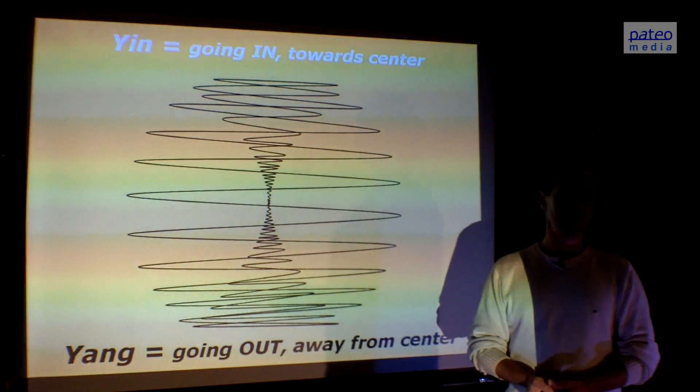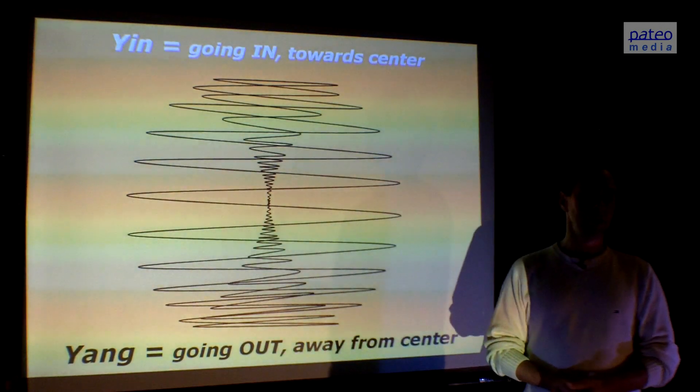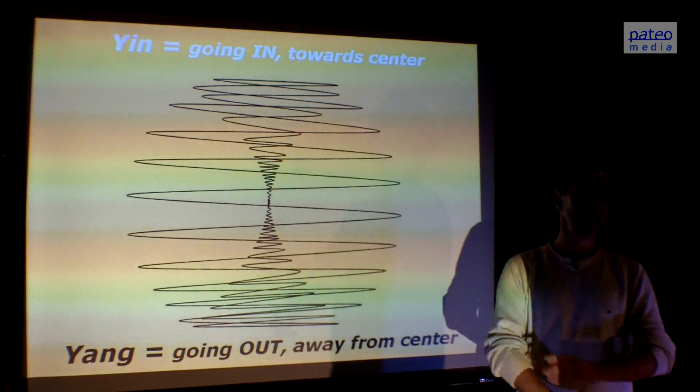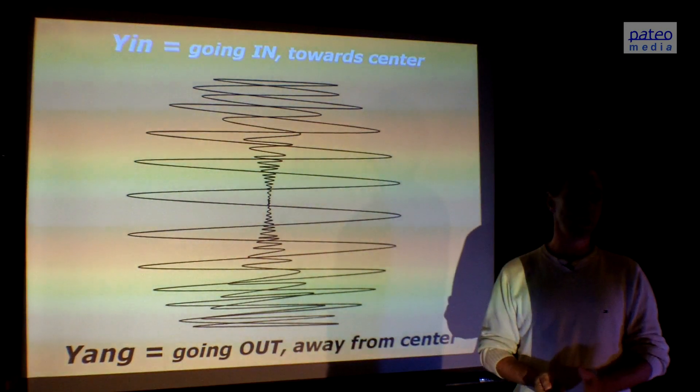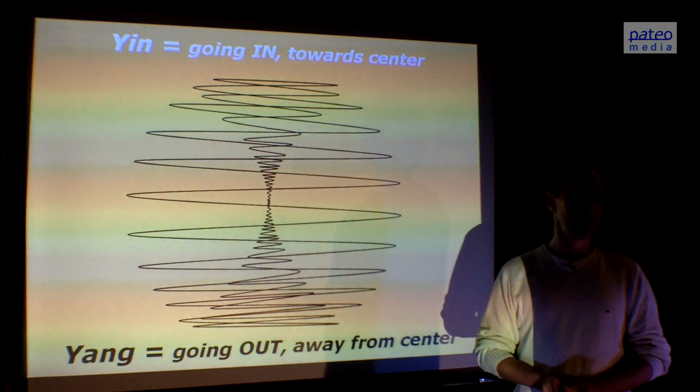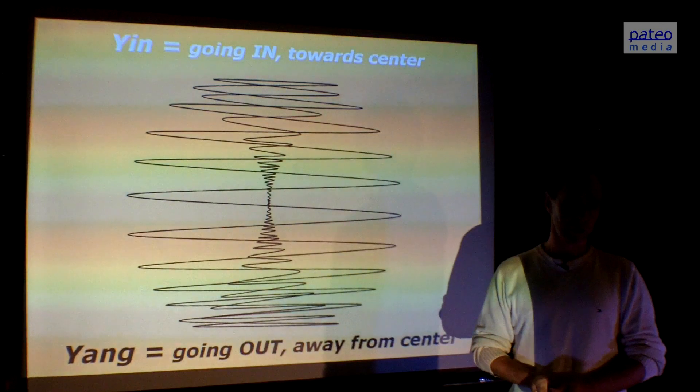Ancient science talks about yin and yang, and these concepts are perfectly clear once you understand the dynamics of this apple. Yin means going in towards the center, and yang means going out, away from the center.